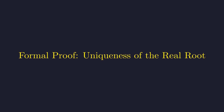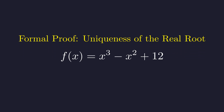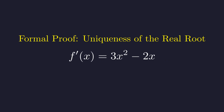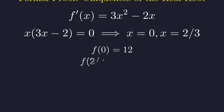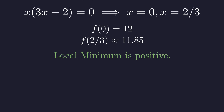For a final layer of rigor, we can use calculus to formally prove the root's uniqueness. Consider the function f whose roots are our solutions. Its derivative, f prime of x, is 3x squared minus 2x. Setting the derivative to 0 gives us critical points at x equals 0 and x equals 2 thirds. The function's values at these turning points are 12 and about 11.85. Crucially, the local minimum is positive — since the lowest point the curve reaches is still well above the x-axis, it can never turn back to cross it again. This formally proves that the root at x equals negative 2 is unique.